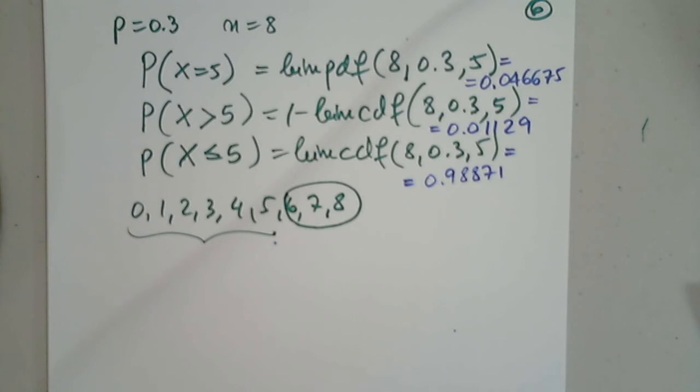So, let's take a look. Round to three decimal places, 0.047. Great job. Greater than five, 0.011. Great job. And it has to be the complement, 0.989. Excellent.